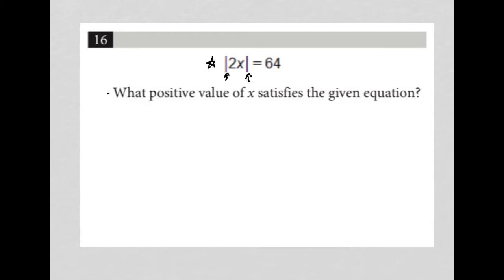So it's actually a very simple question, because having the absolute value of 2x equaling 64 tells us that either we can have 2x equals 64 or 2x could equal negative 64.